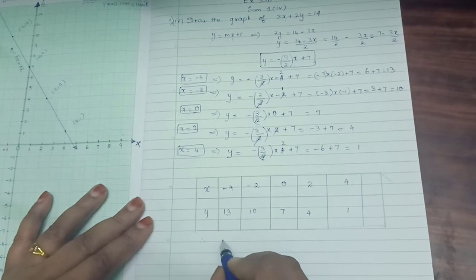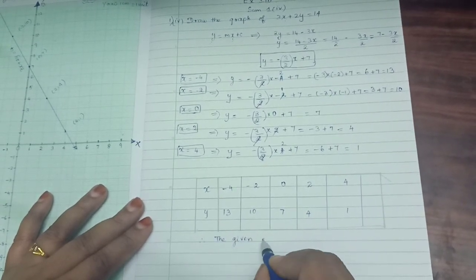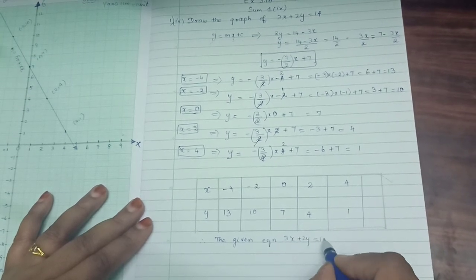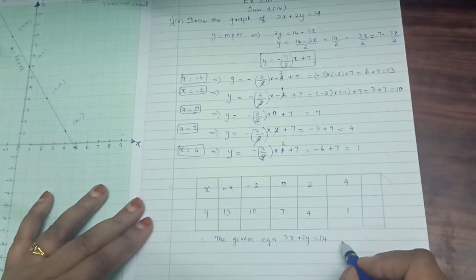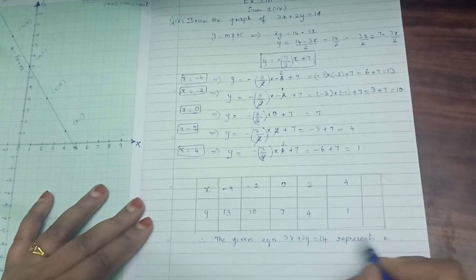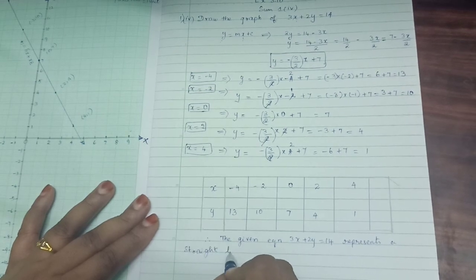I will write next at last below the table. The given equation 3x plus 2y equals 14 represents a straight line. At last, you have to write this as a solution.